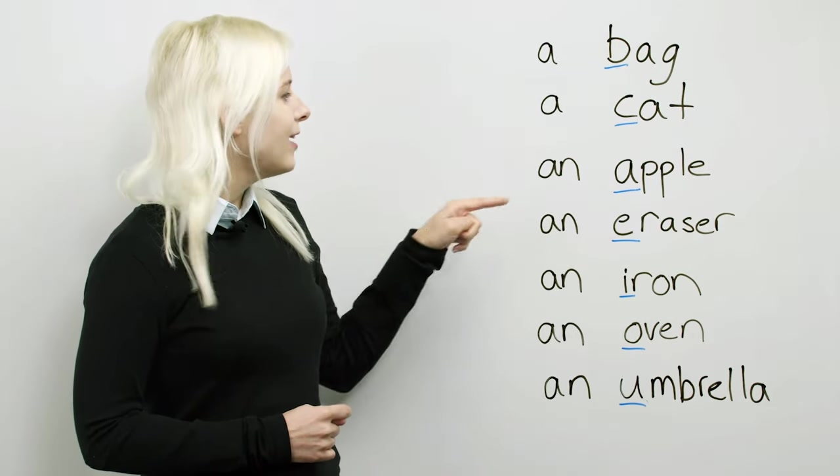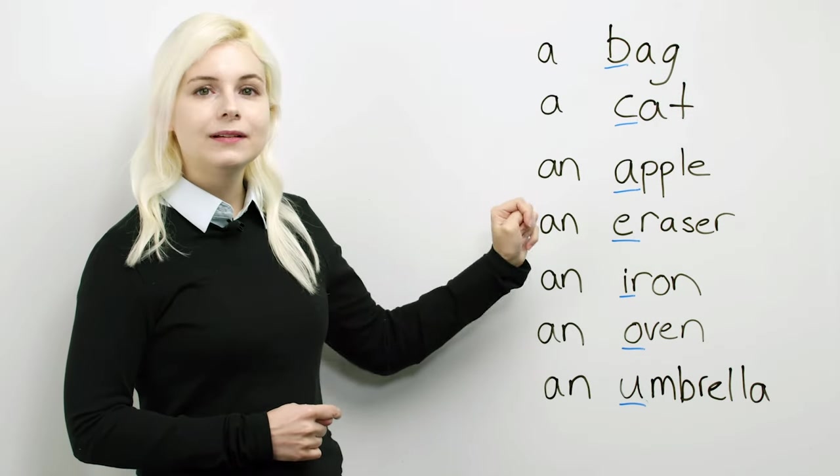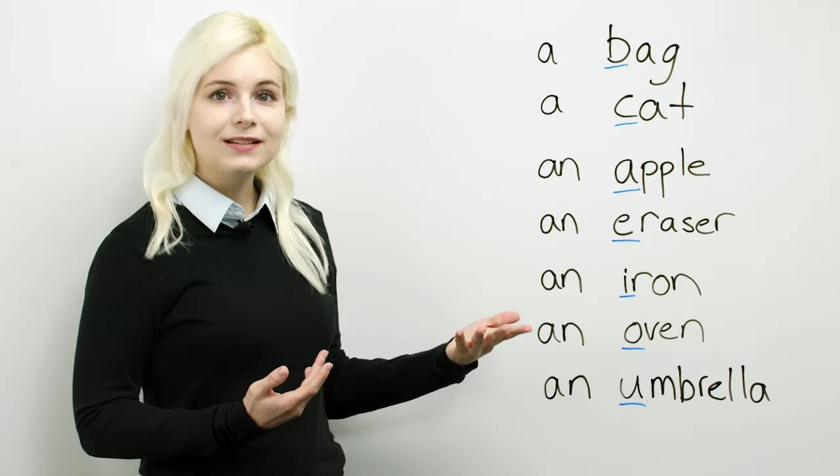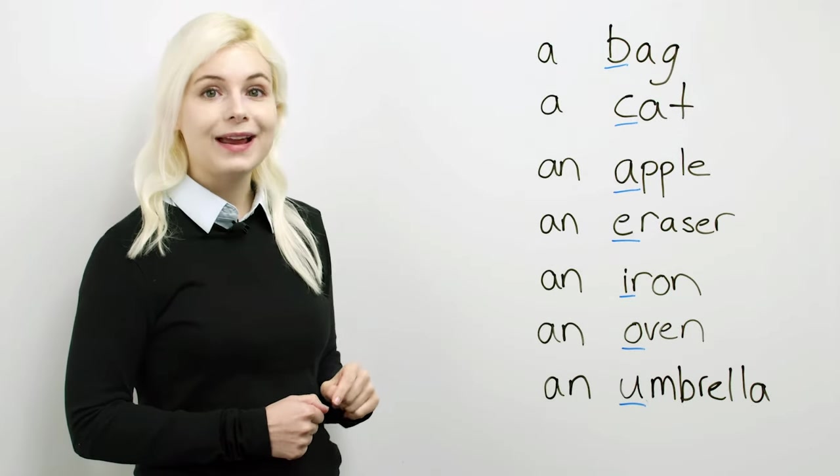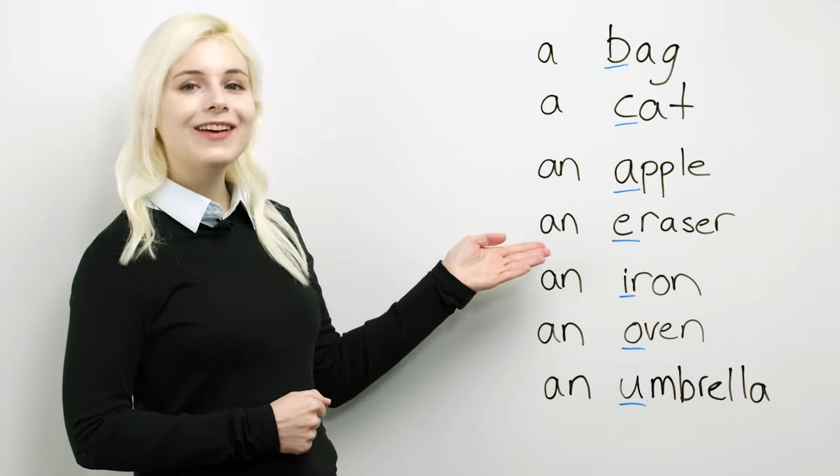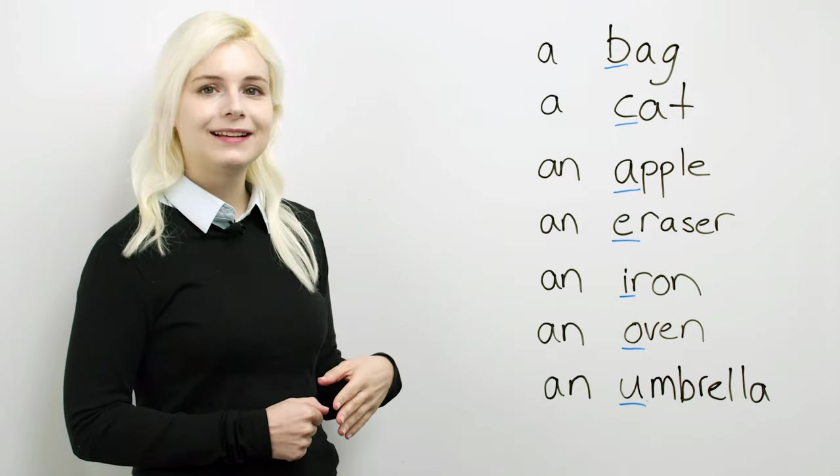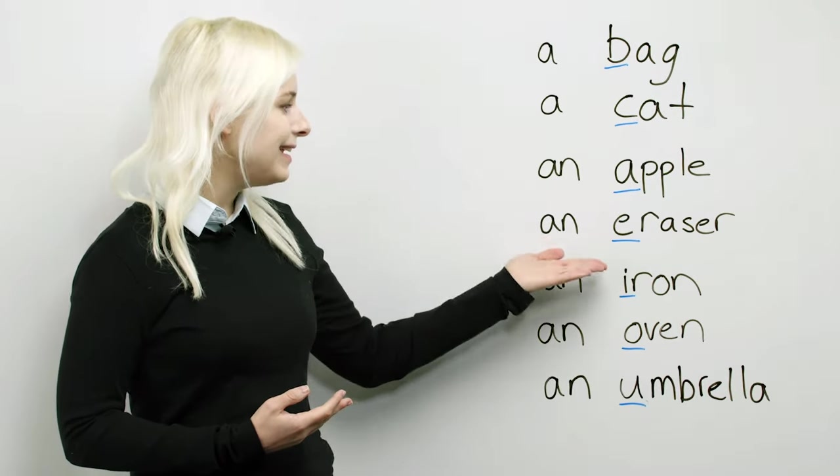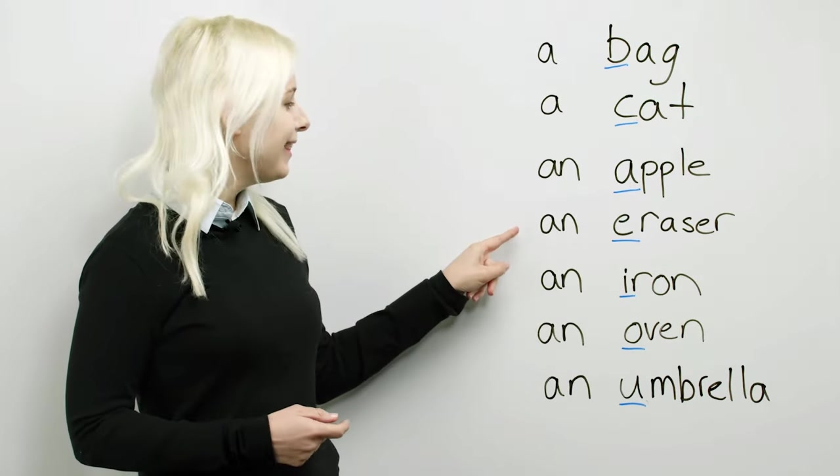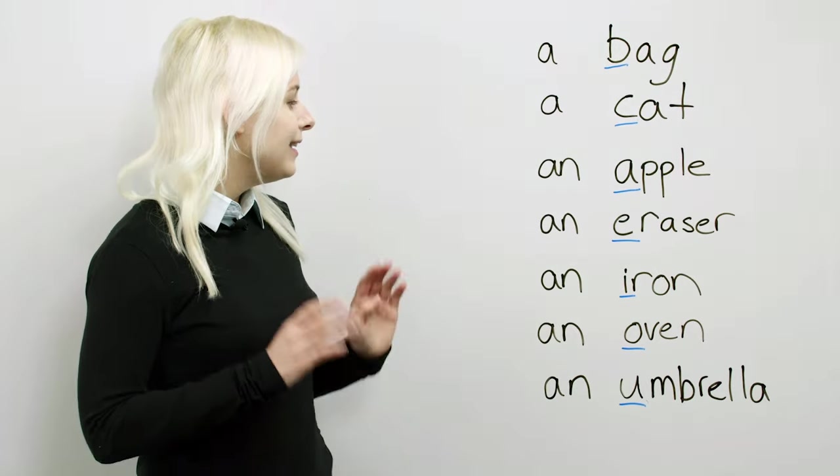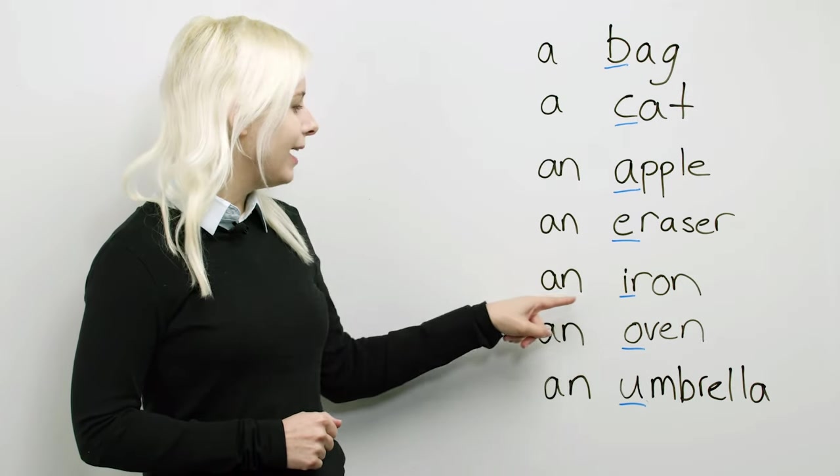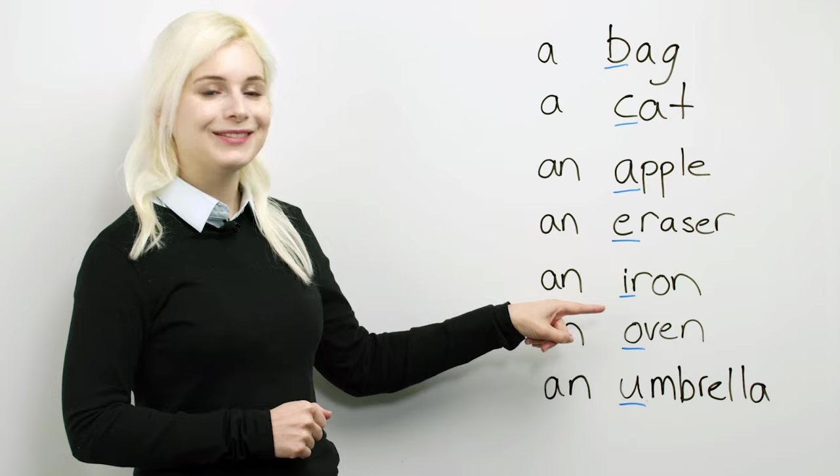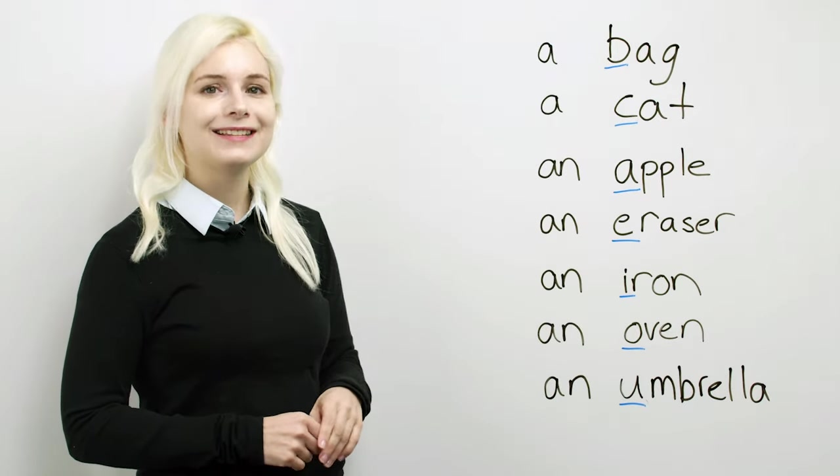Next, we have an apple. Apple starts with A, which is a vowel, so an is correct. Then we have an eraser. Eraser starts with an E, E is a vowel, this is correct. Next is an iron. Iron starts with an I, I is a vowel, an iron is correct.